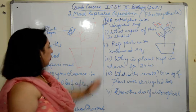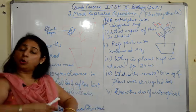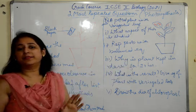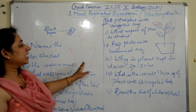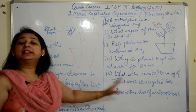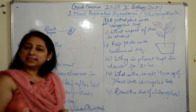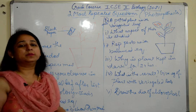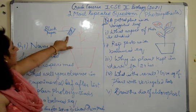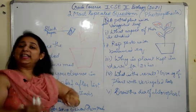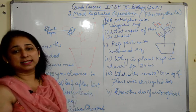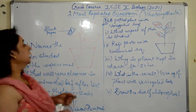The questions asked are on the whole chapter, and it's just the diagram which you have to identify — everything else is from the chapter only. We'll take up those two questions, specifically because they are the most repeatedly asked. First, they give you a potted plant with black paper attached to it, which tells you that they are studying whether sunlight is necessary for photosynthesis.